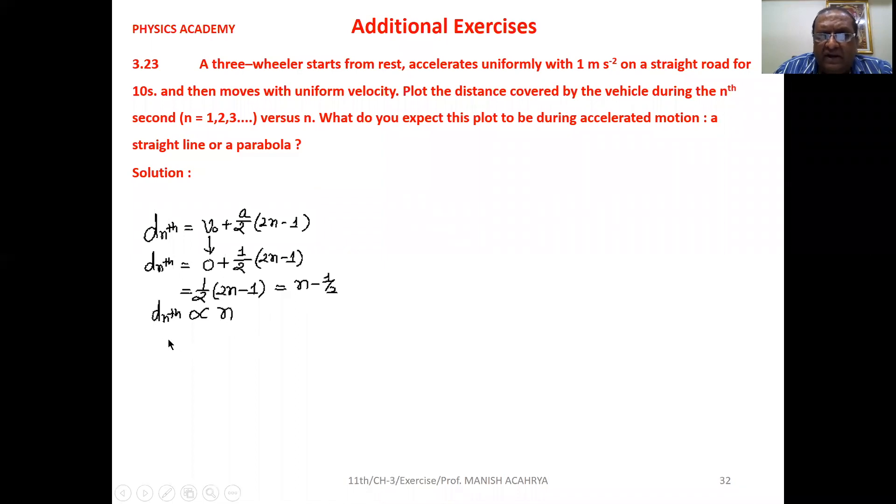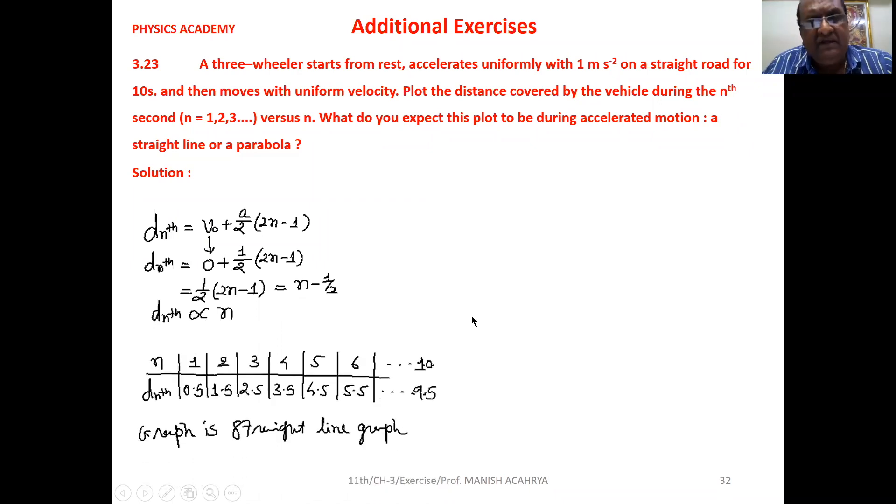From the equation, we can write distance traveled in nth second is directly proportional to n. Obviously, the graph will be a straight line because linear proportionality is there.